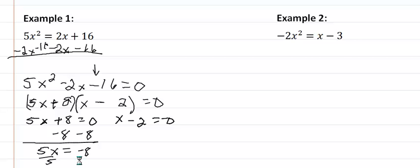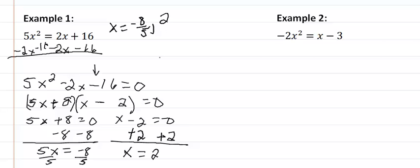I'm kind of running out of room down here at the bottom, so we're going to write the answer up here. So we're going to get x is equal to negative 8 fifths for the one, and then we solve for the other, and we get x is equal to 2. And there's my two solutions.